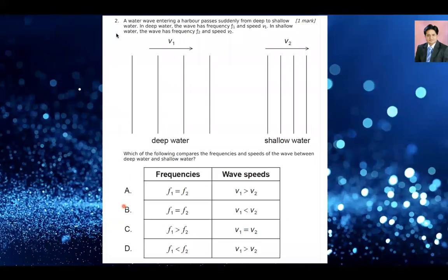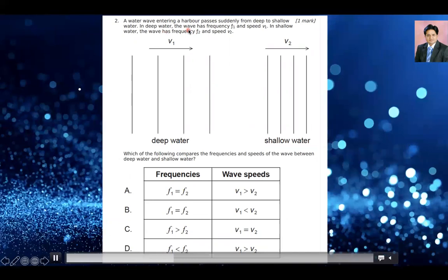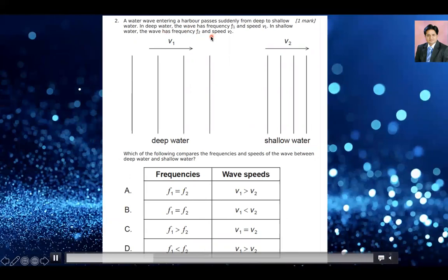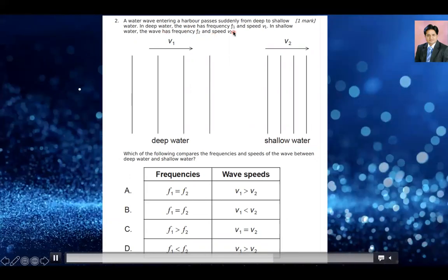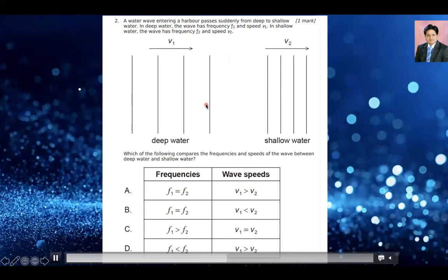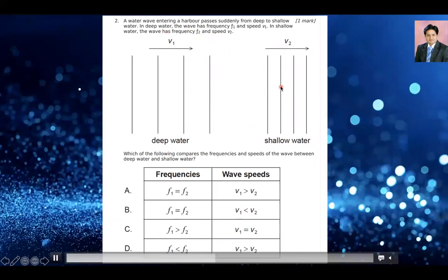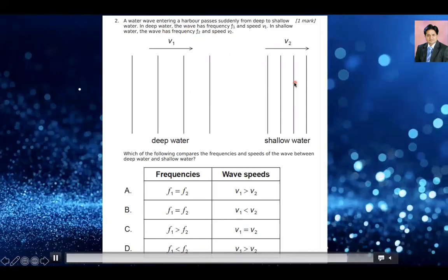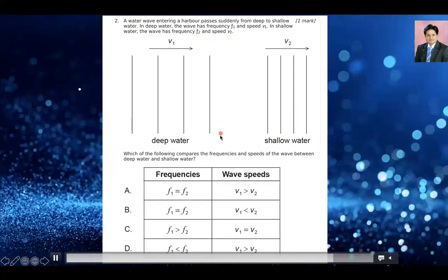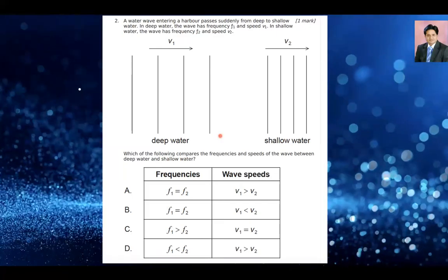Let's look at the next question. A water wave entering a harbor passes suddenly from deep to shallow water. In deep water, the wave has a frequency F1 and speed V1. In shallow water, the wave has a frequency F2 and speed V2. The question is: which of the following compares the frequencies and speeds of the wave between deep water and shallow water?